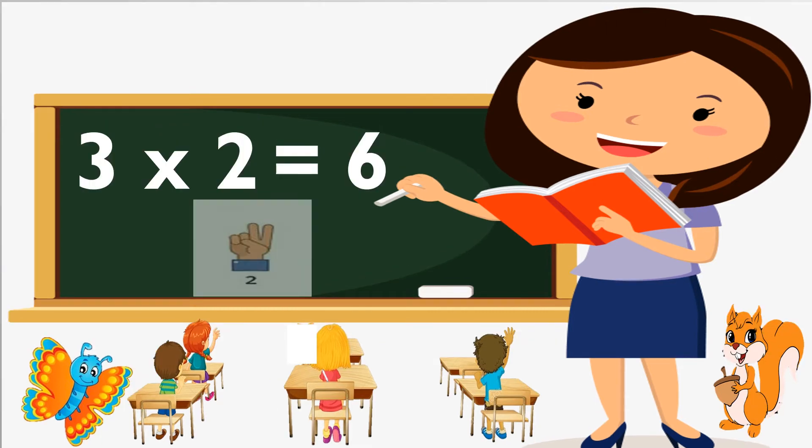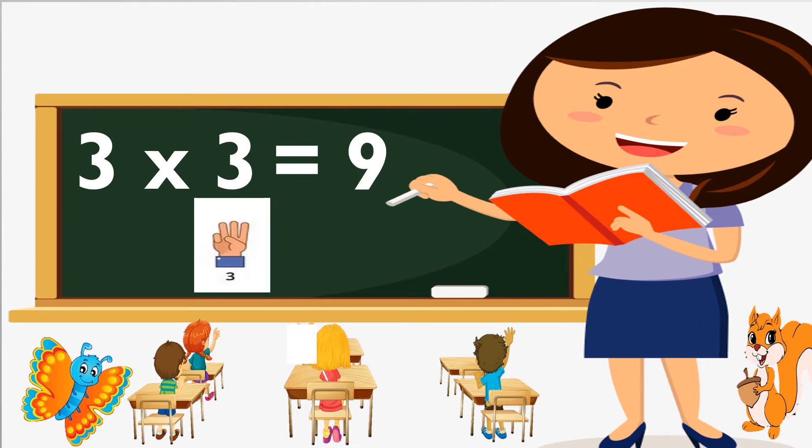Three twos are six, three twos are six. Three threes are nine, three threes are nine.